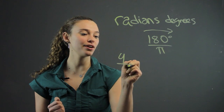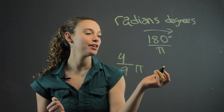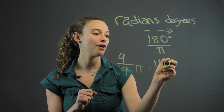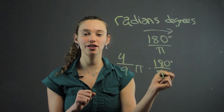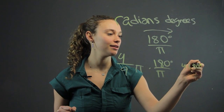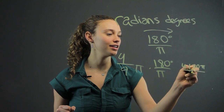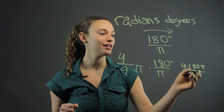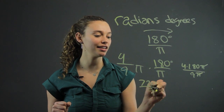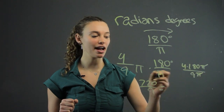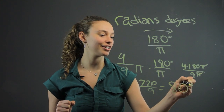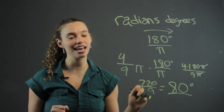If we have 4 ninths pi — that's radians — we're going to multiply it by 180 over pi to go to degrees. So now that's 4 times 180 pi over 9 pi. The pi's are going to cancel out. We'll get 720 over 9, because we have pi over pi. Now we have 720 over 9, which gives us 80. And don't forget your little degree sign for the units — 80 degrees.